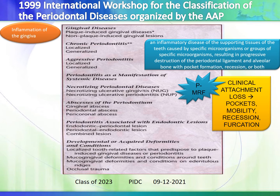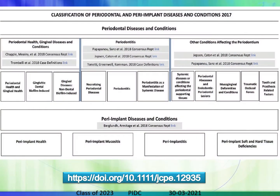The 1999 classification was one we initially followed. Now we go on with the 2017 classification, which divides periodontal diseases into periodontal health, gingival diseases and conditions, periodontitis, and other conditions affecting the periodontium.